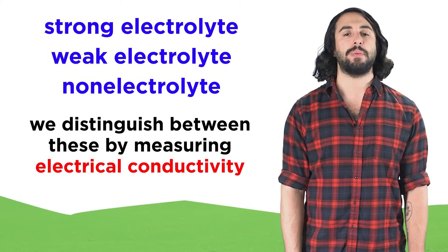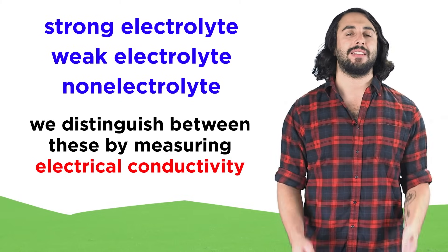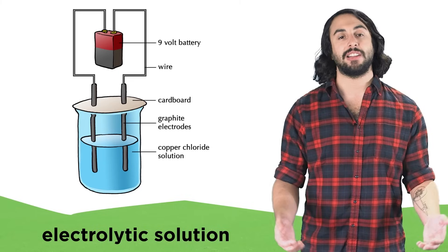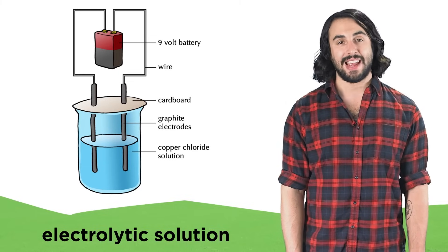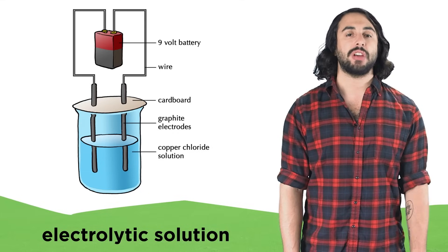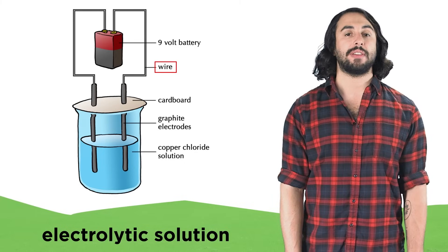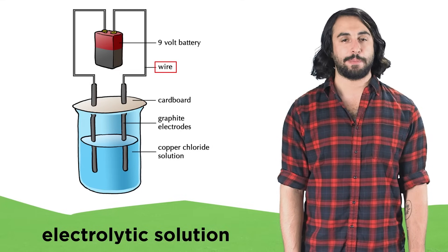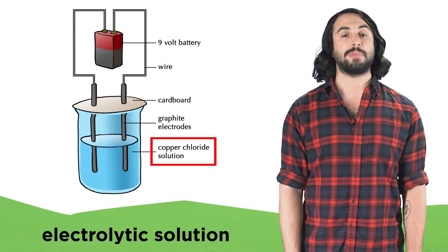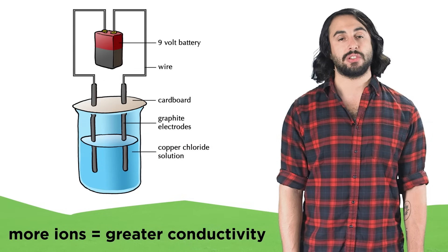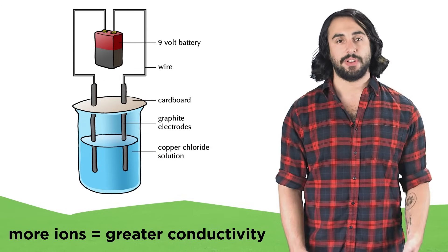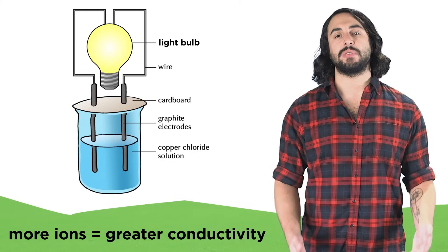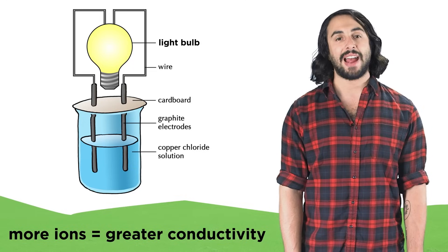We can categorize substances as being one of these three things by measuring the electrical conductance of their corresponding aqueous solutions. In order to conduct electricity, a substance must contain freely mobile charged species, such as the case with metallic wires, which allow for the free movement of electrons. In a solution, these freely mobile charged species are the ions that result when a substance dissociates. The more ions there are in solution, the greater the conductivity and the stronger the electrolyte, and we can measure the current flow or simply observe the brightness of a light bulb included in the circuit to gather this kind of data.